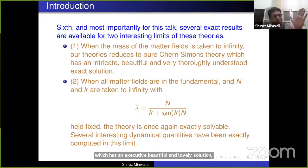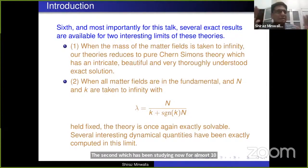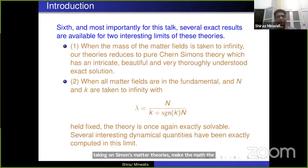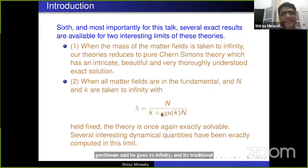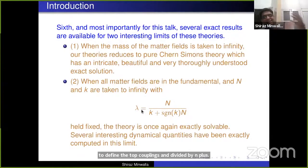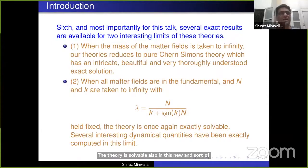The second solvable limit, studied now for almost 10 years, is a case in which you take Chern-Simons matter theories, put the matter in the fundamental representation, and take the 't Hooft large N limit. In this limit, N goes to infinity, the level of the Chern-Simons theory goes to infinity, and we define the 't Hooft coupling as N divided by N plus kappa — the renormalized level — which stays fixed. The theory is solvable in this new and unusual limit.